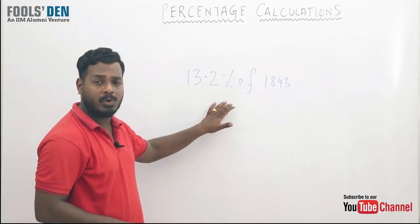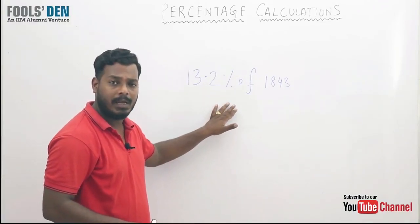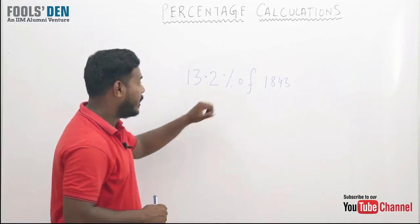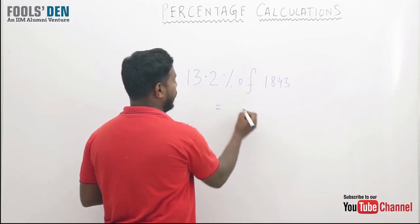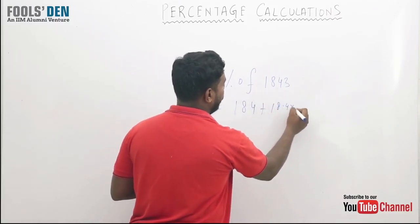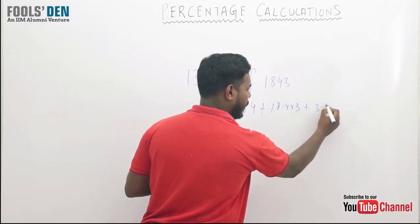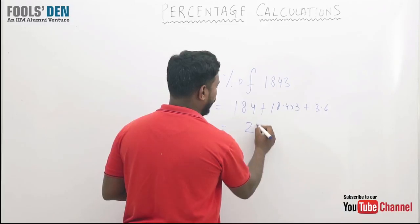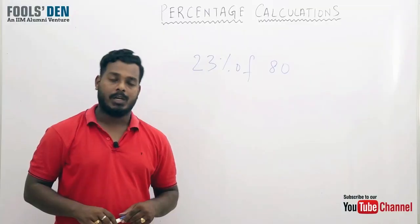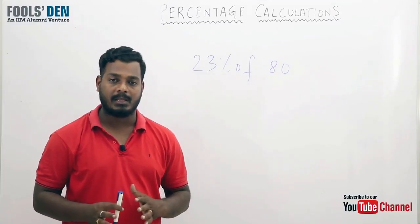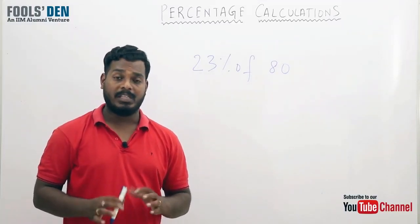Suppose this calculation - how much time does it take us? It hardly takes us 3 seconds if we are good with the concepts. So how to go about it? This is equal to 184 plus 18.4 into 3 plus approximately 3.6, which equals approximately 242.